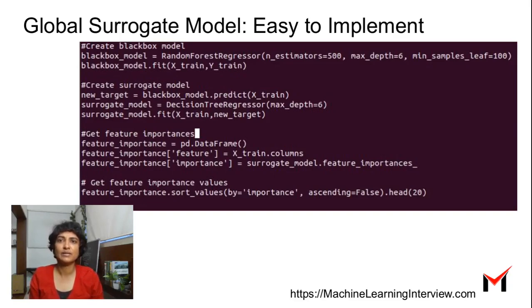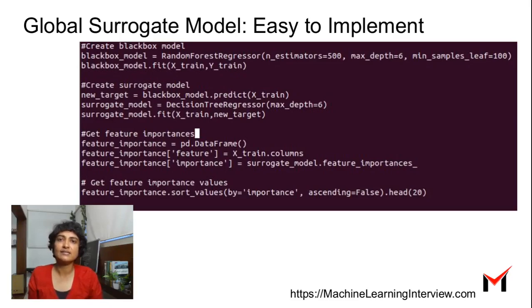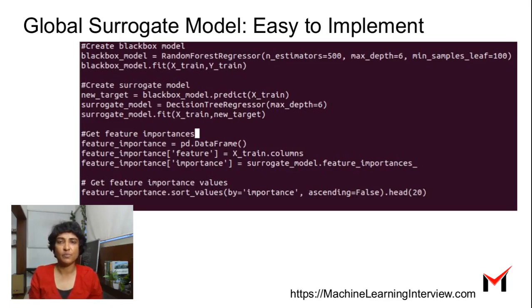Here is a very simple example to show how simple it is to implement this in Python. You create a black box model which is a random forest regressor — it could be more complex, but we use a random forest here. That's the black box model. I fit the model and make predictions on the training data, calling it new target. The surrogate model is then trained with the same training data but with new target as the target variable — the predictions from the black box model. From this surrogate model, I can learn the feature importances using the standard feature importances that a decision tree offers, since my surrogate model is a decision tree.